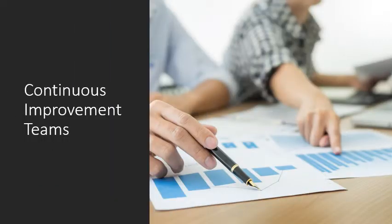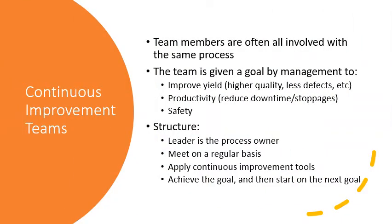The next type of team is continuous improvement teams. Team members are often all involved with the same process. The team is given a goal by management to improve the yield, which means higher quality, less defects, etc., improve productivity such as reducing downtime or stoppages, or increase safety. The structure of a continuous improvement team has a leader that is a process owner meeting on a regular basis, applying continuous improvement tools, achieving the goal, and then starting on the next.